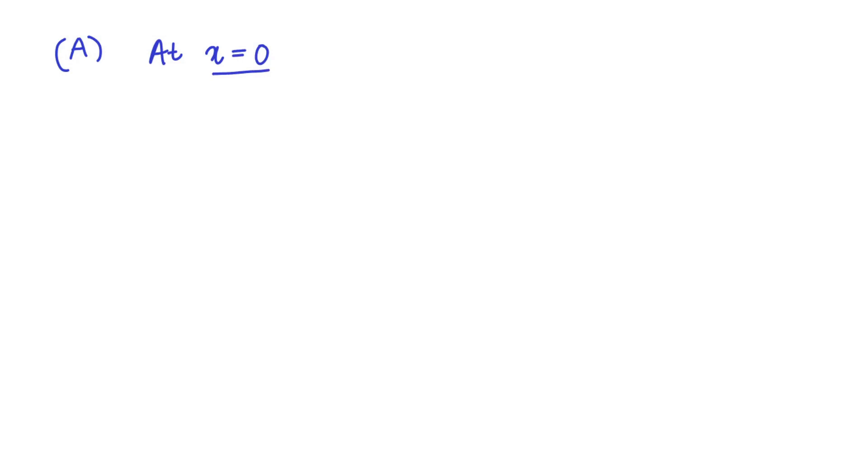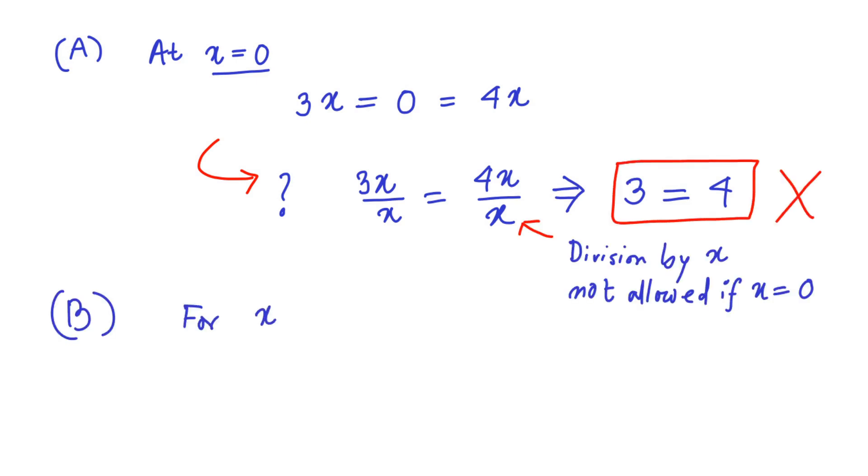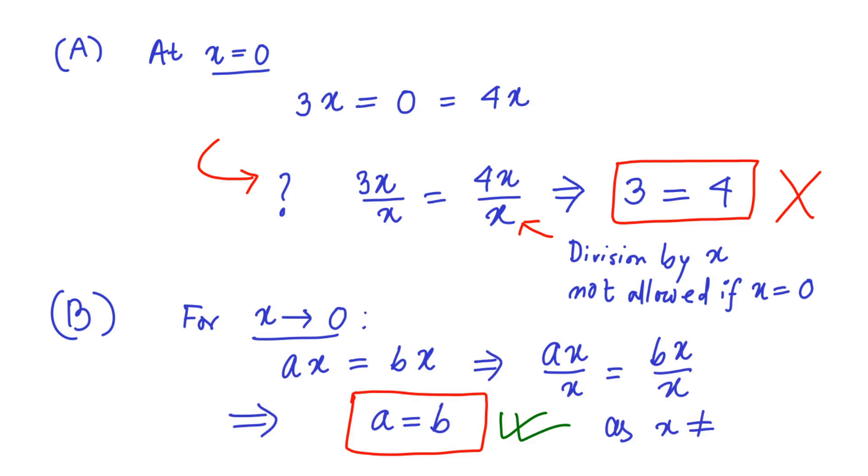Let me emphasize this point that the limit X goes to 0 does not mean X equal to 0. In order to appreciate this, let us consider this equation at X equal to 0, 3X equal to 0, which is equal to 4X. However, X being 0, you are not allowed to divide both sides by X. Otherwise, you would end up proving, rather incorrectly, 3 equal to 4, as you see it here. On the other hand, in the limit X goes to 0, an equation AX equal to BX implies A equal to B, as now you are allowed to divide both sides by X, given X is not equal to 0.